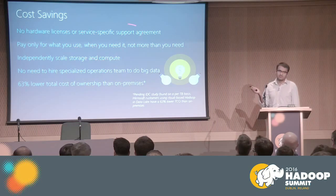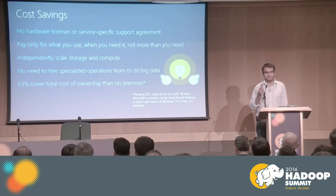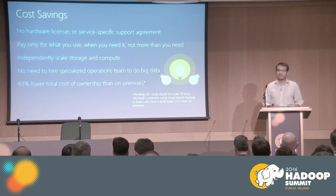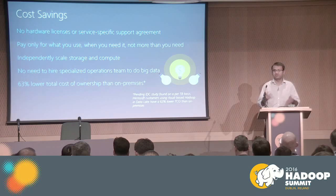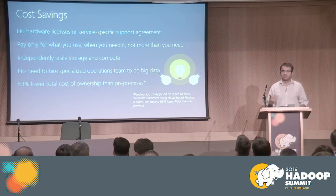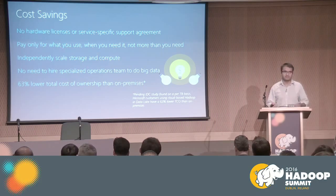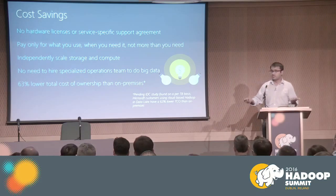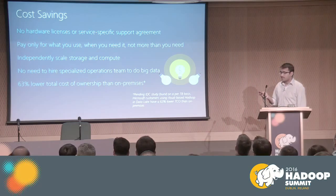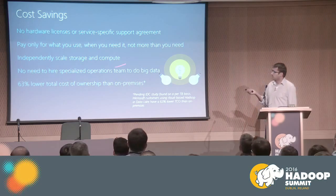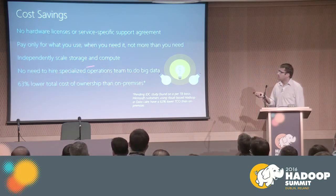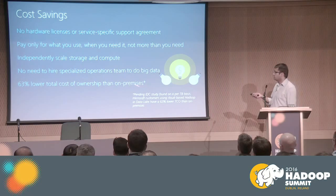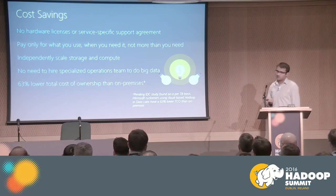One of the biggest cost savings is the ability to independently scale storage and compute. On-prem, you use the same cluster for both, so as storage grows you must increase cluster size, and same for compute. In the cloud, you can separate the two — increase one without increasing the other. Storage is also very cheap on the cloud. Since Microsoft handles deployment, monitoring, and support, you don't need to hire a specialized operations team. One study found more than 60% lower total cost of ownership using cloud versus on-prem.